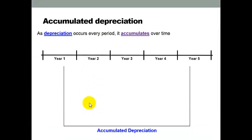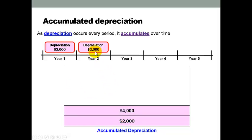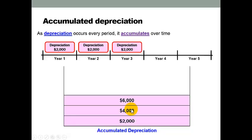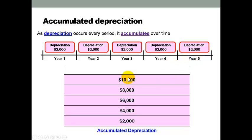The concept of accumulated depreciation is important to understand. Year by year, the depreciation accumulates over time. In the example, the first year's depreciation was $2,000, so accumulated depreciation is $2,000. The next year we charge another $2,000 against profit, and the accumulated depreciation becomes $4,000, and so on. After five years, we have depreciated $10,000 worth in total.